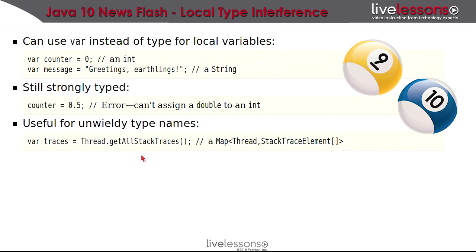This is particularly useful for unwieldy type names. As a horrifying example, the getAllStackTraces method of the thread class returns an object of some undecipherable type, and now I no longer have to use it in the declaration. I just say var, and it's automatically used. So I predict this is going to be a really popular feature. We're not using this feature in these lessons yet, but over time, we'll all get used to it.